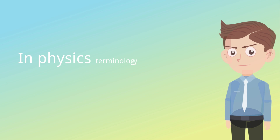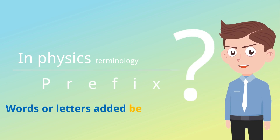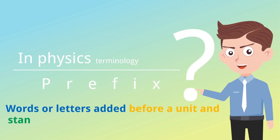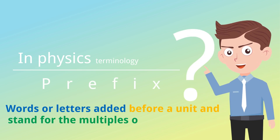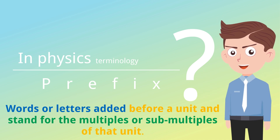In physics terminology, prefixes are words or letters added before a unit and stand for the multiples or submultiples of that unit.